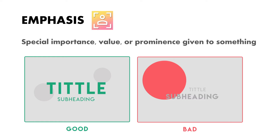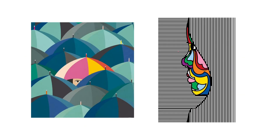Next is emphasis. Emphasis is the special importance, value, or prominence given to something. It refers to the importance of elements in your design and the order they should have. Elements can be emphasized using bright colors, big shapes, or any property that makes them stand out from the rest. For example, a title is emphasized with a bright color and larger size compared to a subheading. A bad example is when unimportant elements are emphasized more than important ones like titles and subheadings.